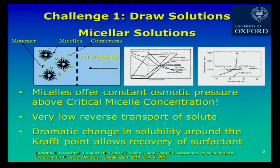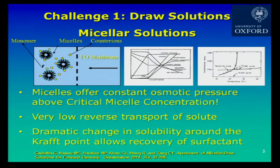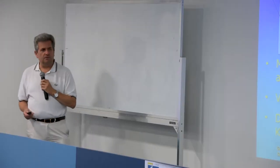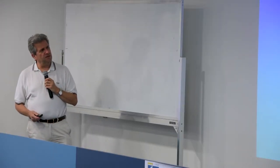There's a dramatic change in the solubility of these micelles around the Kraft point, which allows recovery of the surfactant. A small swing in temperature causes a very big change in solubility. The solubility of the micelle as a function of temperature increases slowly at low temperatures, then suddenly jumps at the Kraft point — a tiny change in temperature gives a very big change in solubility. That allows recovery of the draw solution using waste heat. The second challenge has to do with optimized membranes: we want very high water fluxes but low salt flux.